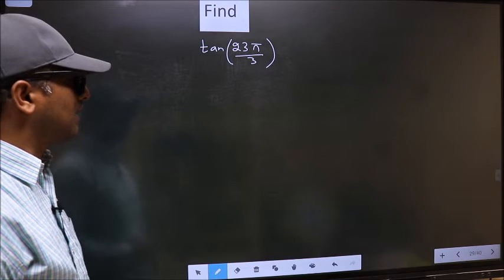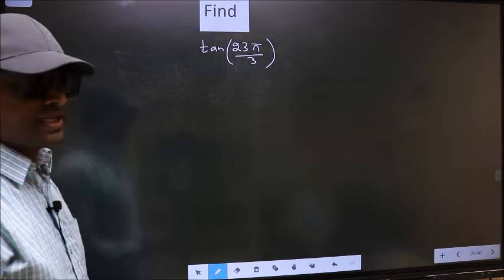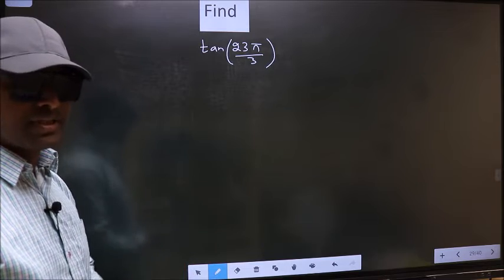Find tan 23π by 3. To find this, we should follow this method.